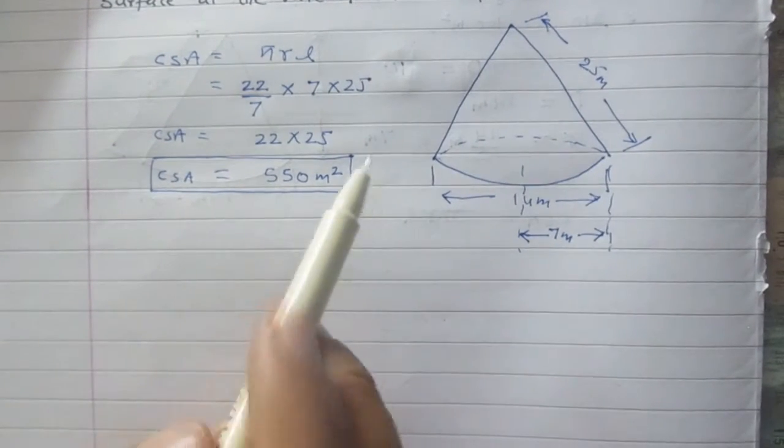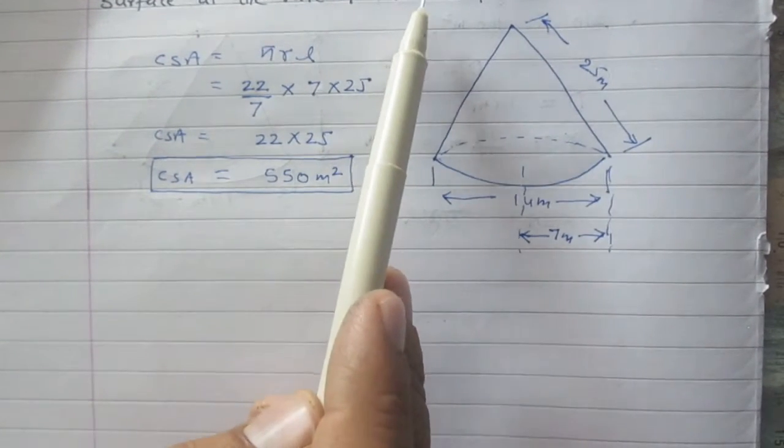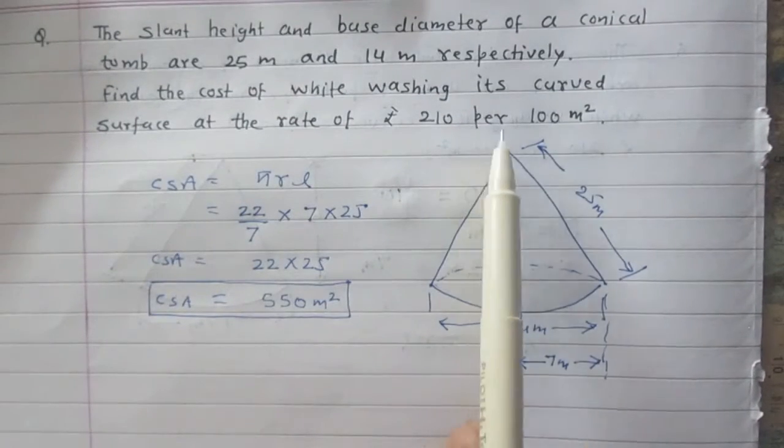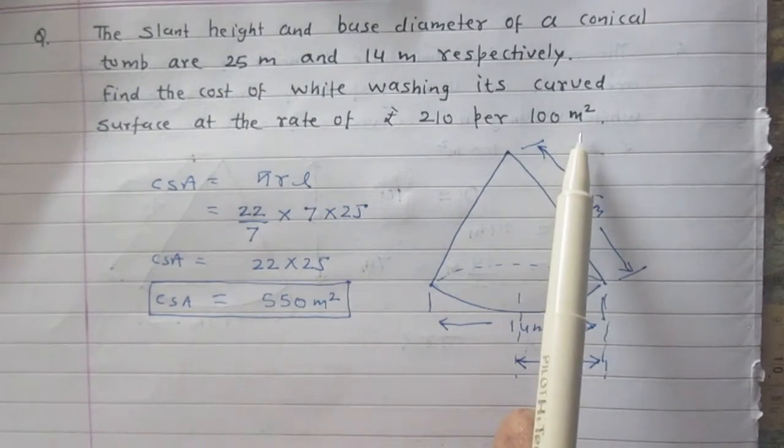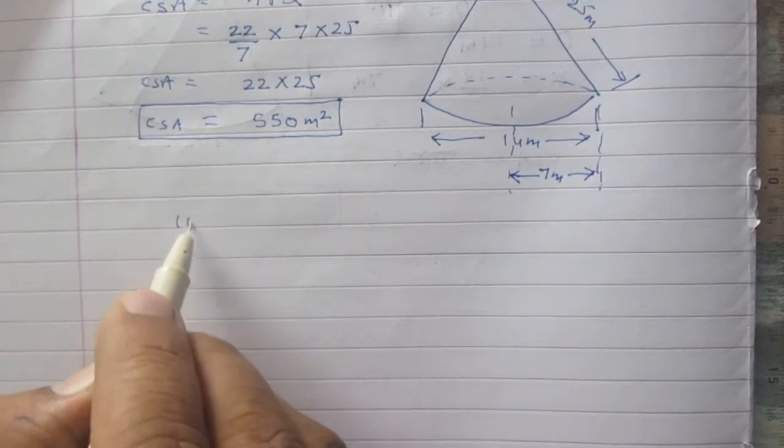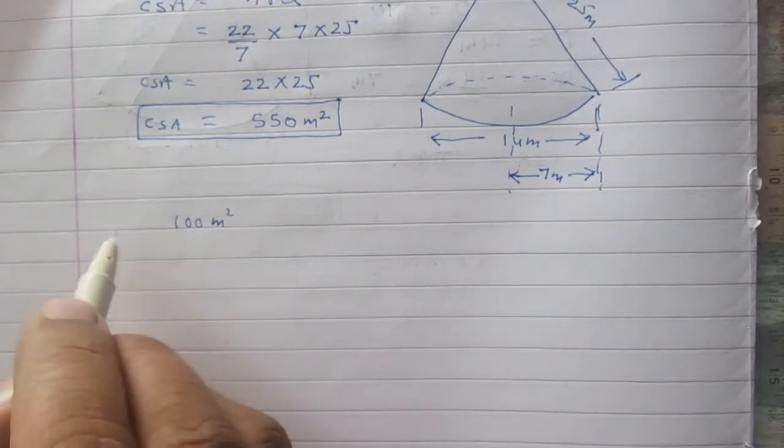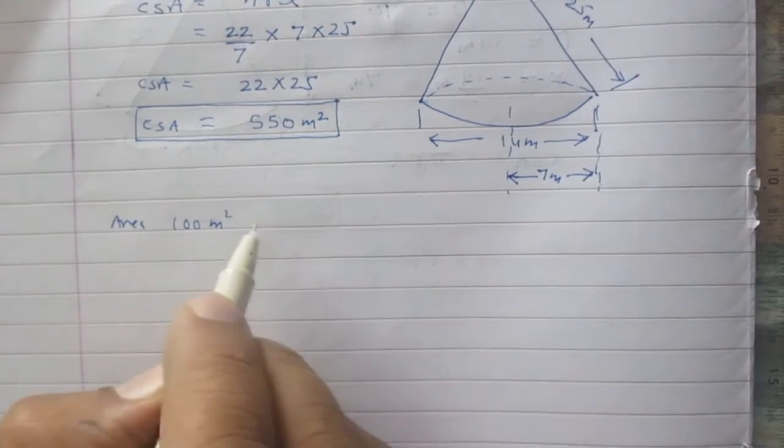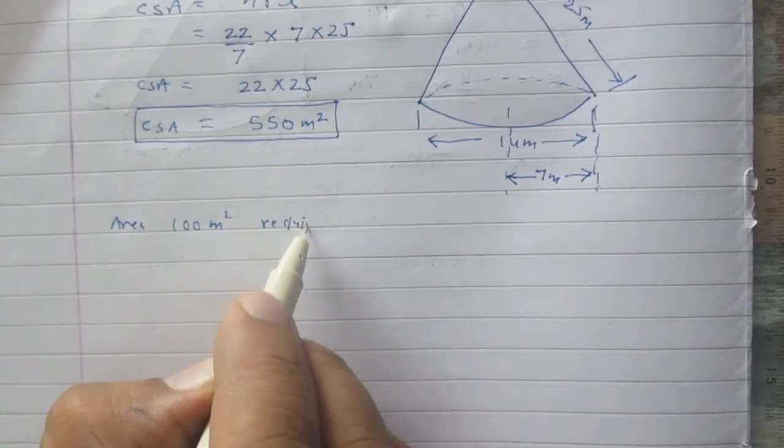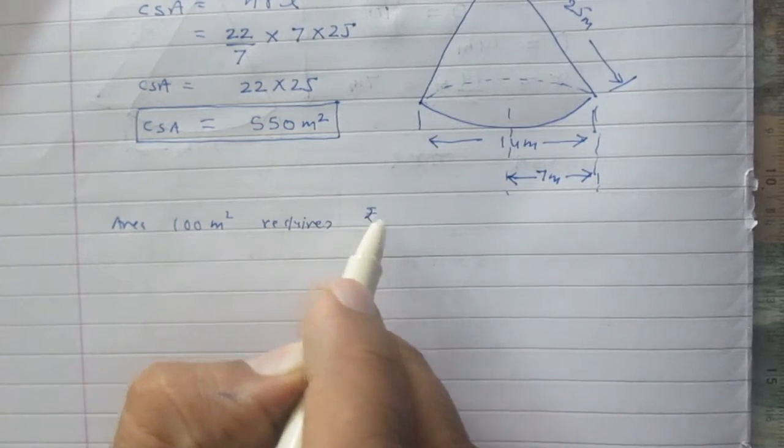We are given the rate Rs 210 per 100m². It means 100m² requires Rs 210.